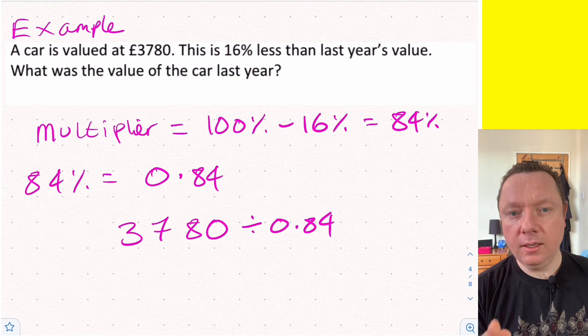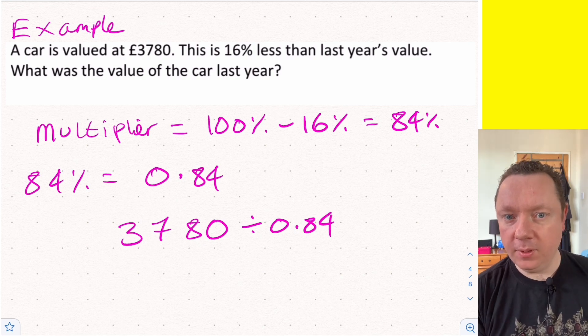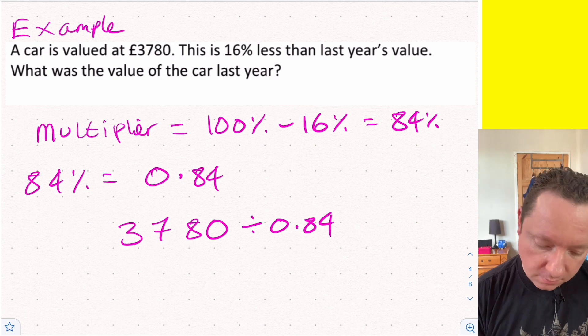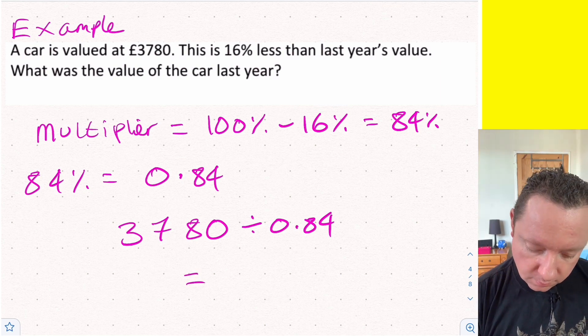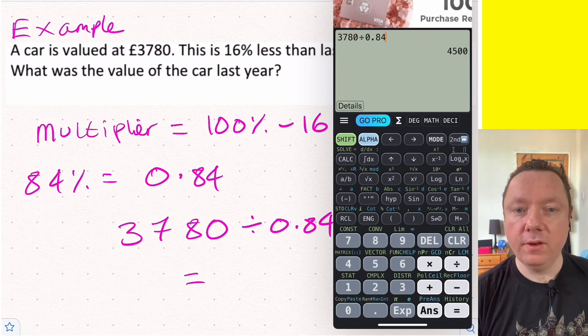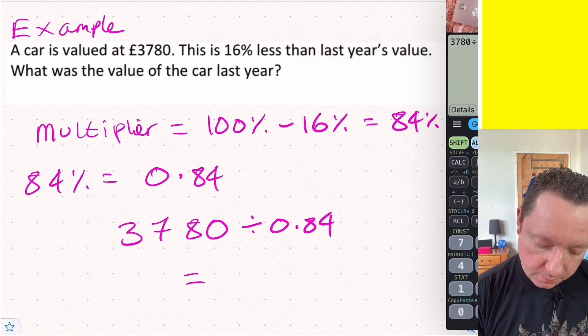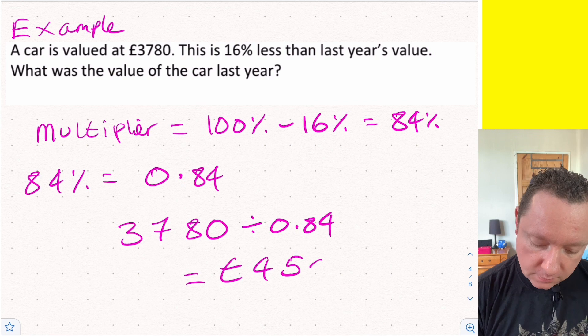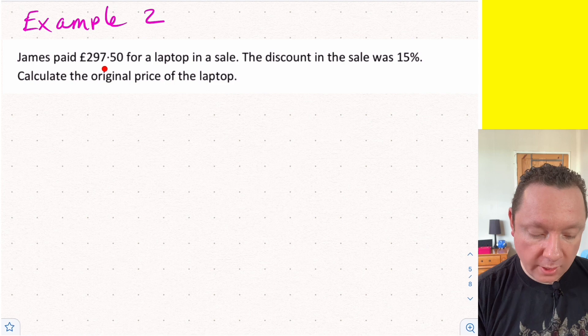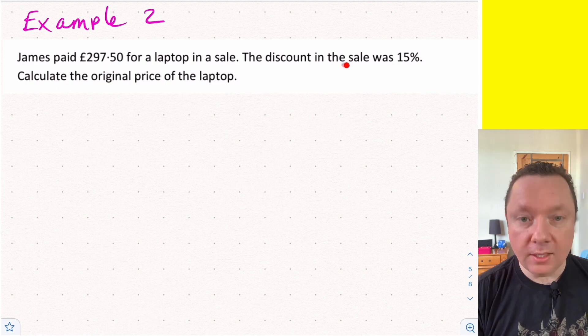Here's a little tip for you: if there's no time in the question, in the calculator paper most of the time you'll have to divide. If there's time, you times. No time, divide. 3780 divided by 0.84 equals £4500 - nice round number.